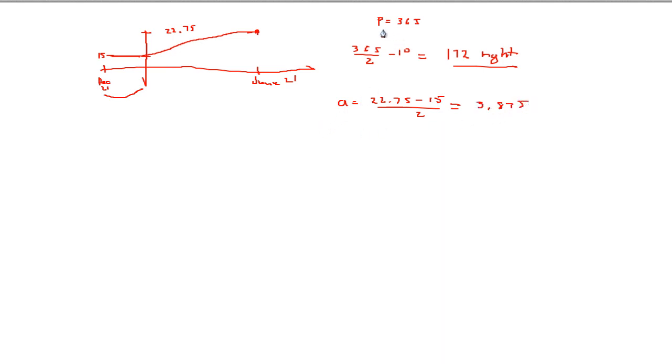The period we know, so therefore the B value will still be the same, so it'll be 2π over 365. Now the vertical displacement or vertical translation D will be equal to our maximum, 22.75, plus 15, divide that by 2, which will give us 18.875.